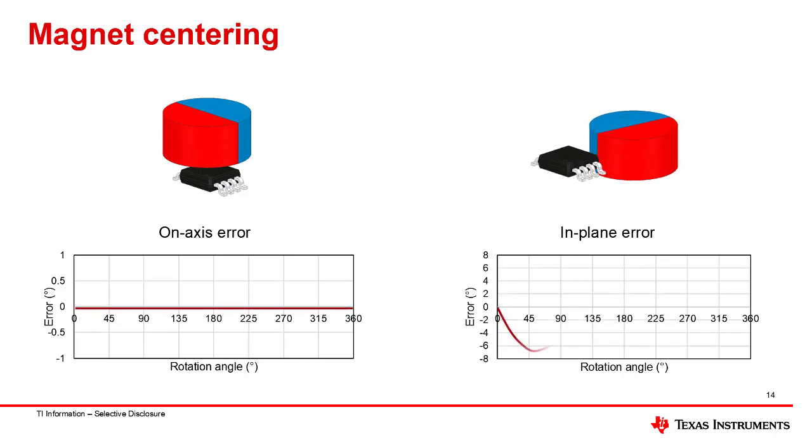In the in-plane scenario, the resulting error is again cyclical in nature, and the maximum error will depend on the severity of the misalignment.